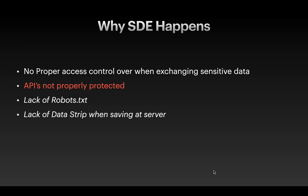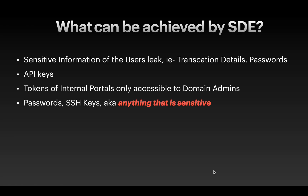Lack of data stripping when saving at the server is also a cause of SDE. What can be achieved through sensitive data exposure includes sensitive user information such as transaction details and passwords, as well as API keys — developers often mistakenly leave keys and tokens in their GitHub repositories. Attackers can also obtain tokens for internal portals accessible only to domain admins, SSH keys, and any other sensitive data that can be misused further.